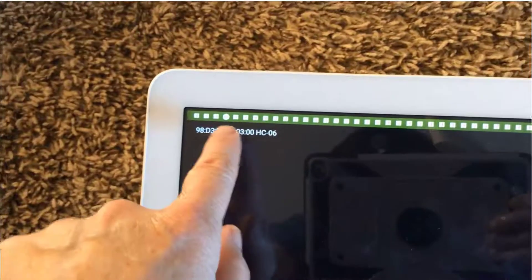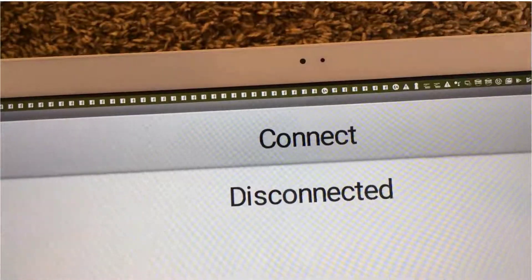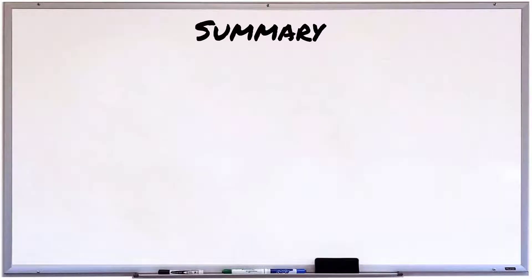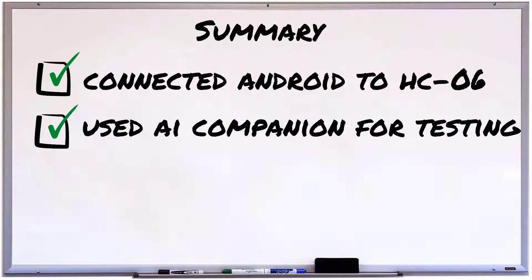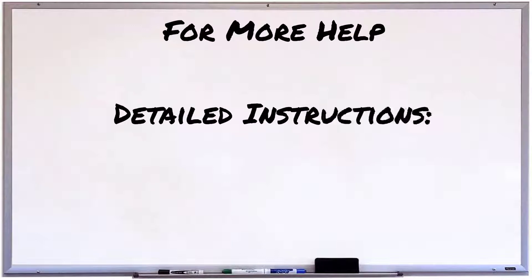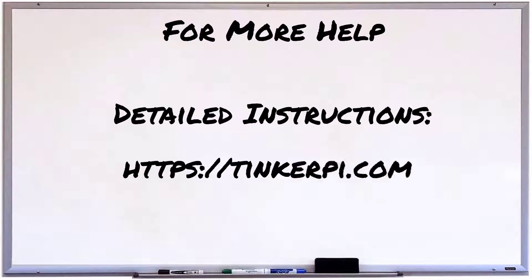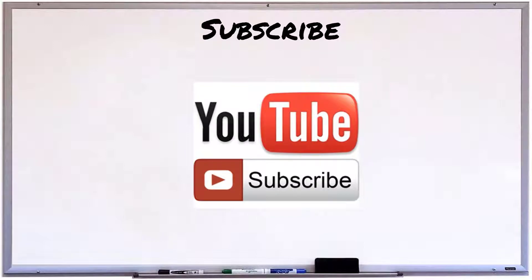Now let's run it again — it's working more like you would expect it to. In this video, we connected our Android app to an HC06 Bluetooth module using App Inventor, and then we used the AI Companion app to test it on our device. This was a lot, so if you want to see some detailed written instructions, click the link in the description. And don't forget to subscribe.